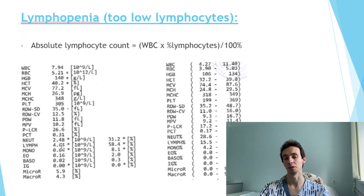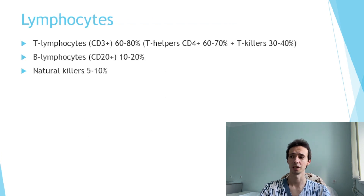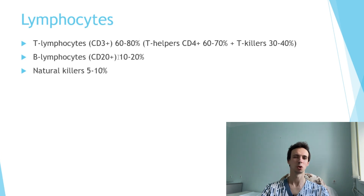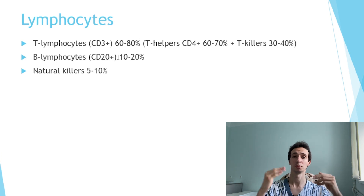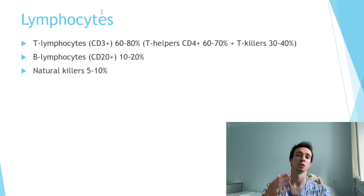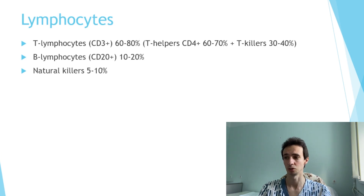And you must compare it to the normal values of your lab. There are different types of lymphocytes: T-lymphocytes, B-lymphocytes, natural killers, and T-lymphocytes are divided into CD4+, CD8+, or T-killers. They all must have a normal relationship to each other. Sometimes this relationship may be disturbed. Sometimes the relationship is normal but general lymphocytes are increased or decreased.